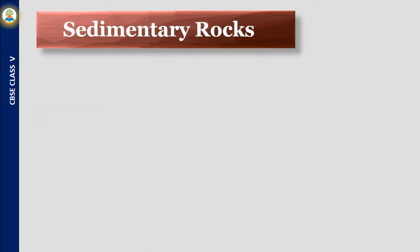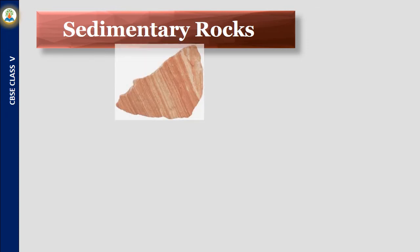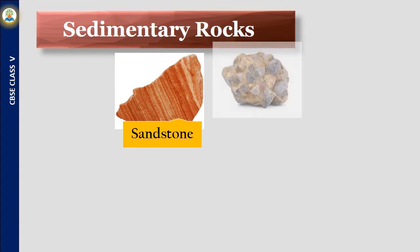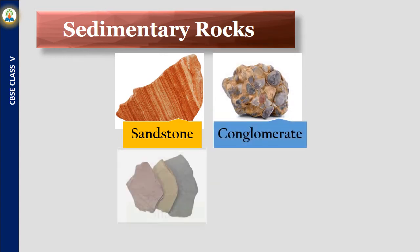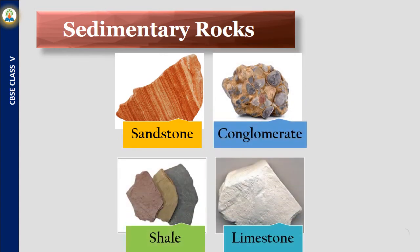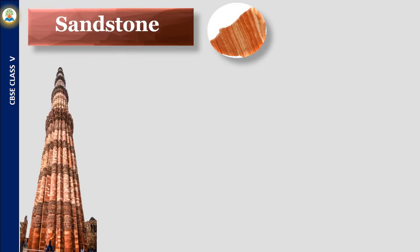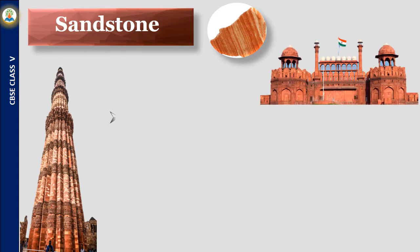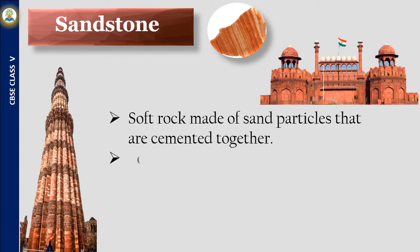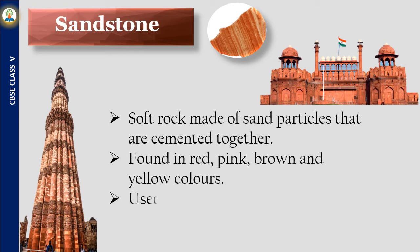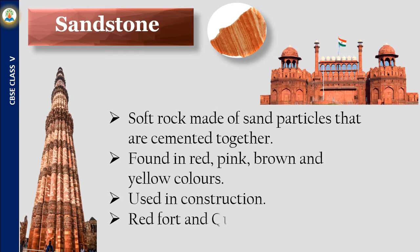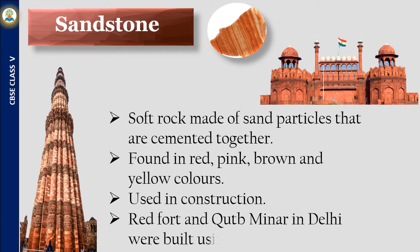Sedimentary rocks constitute only 5% of the total rocks found on earth. Different types of sedimentary rocks are sandstone, conglomerate, shale, and limestone. Sandstone is a soft rock made of sand particles cemented together, found in red, pink, brown, and yellow colors, used in construction. The Red Fort and Qutub Minar in Delhi were built using red sandstone.